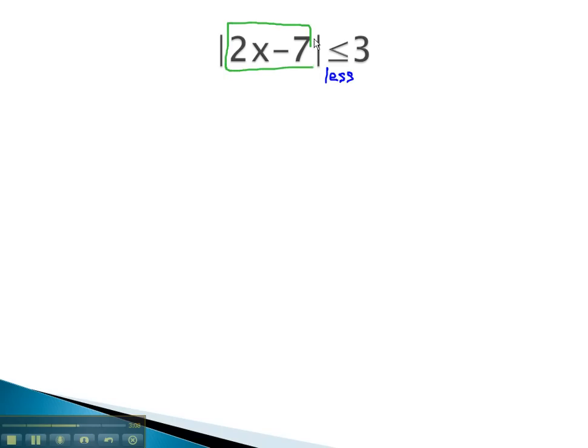Which means the expression inside the absolute value, 2x minus 7, must be between two values, the negative value on the left and the positive value on the right. Now, we simply have to solve this tripartite inequality to finish the problem.